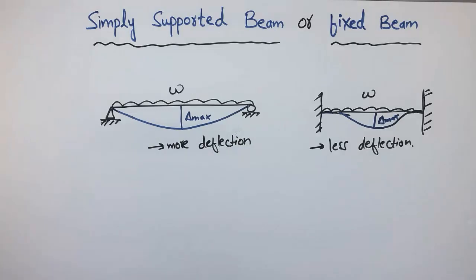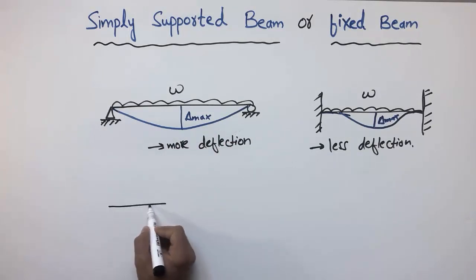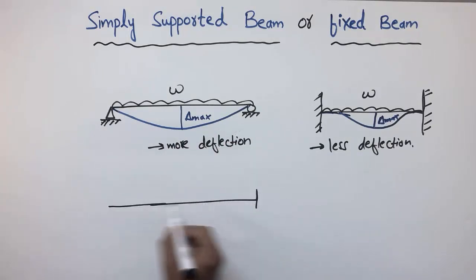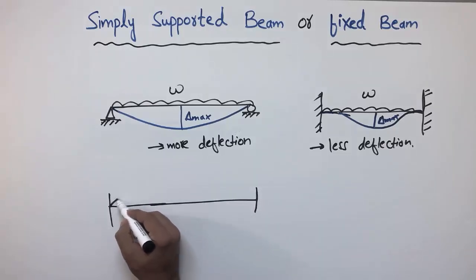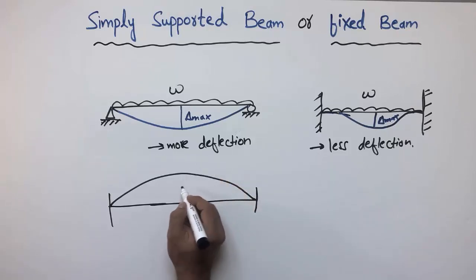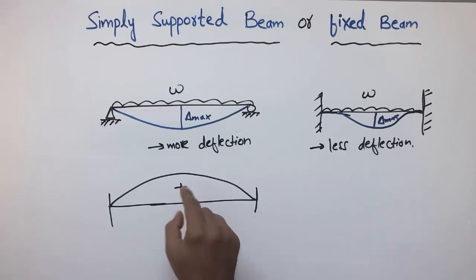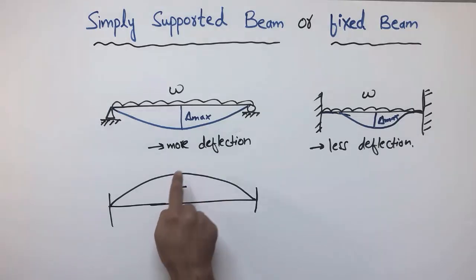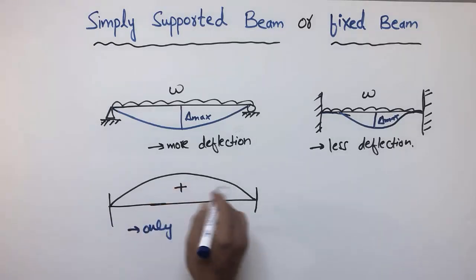Another main difference is the bending moment. In the case of the simply supported beam, if I draw the bending moment diagram, we have only positive bending moment, which is maximum at the midpoint. So in a simply supported beam we have only positive bending moment.